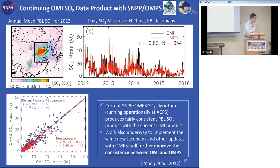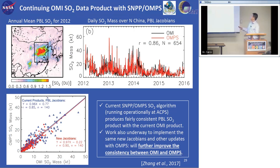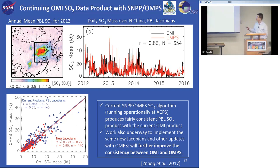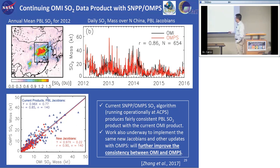OMI is now in its 14th year and has already lost some spatial coverage due to instrumental issues, so it's important to continue this data record. We are now producing SO2 retrievals using the same algorithm with the SUOMI-NPP VIIRS instrument. The annual SO2 retrieved from VIIRS for 2012 tracks OMI well — correlation of about 0.85 on a daily basis. We expect further improvements currently underway for both retrievals to enhance consistency between the two sensors, with the correlation coefficient going up to 0.9.